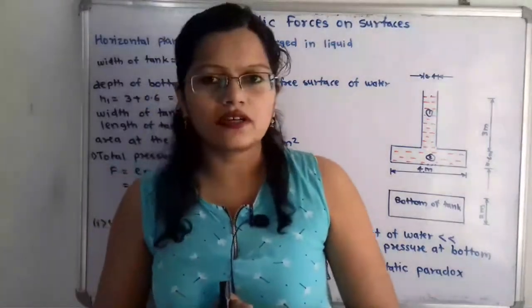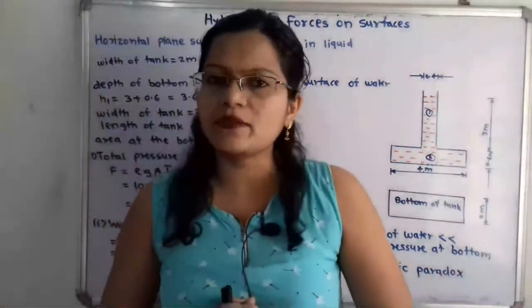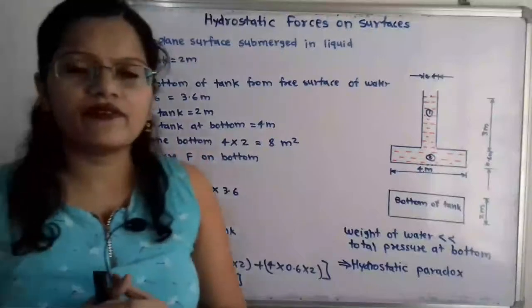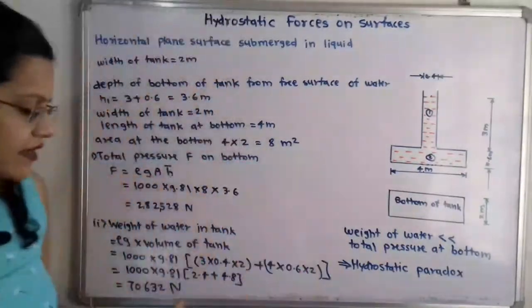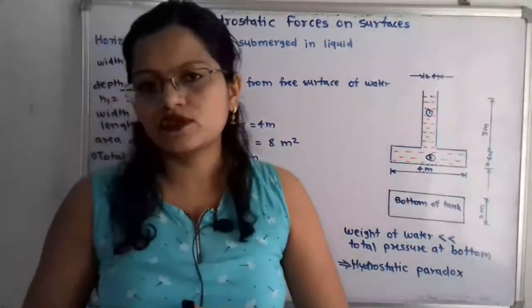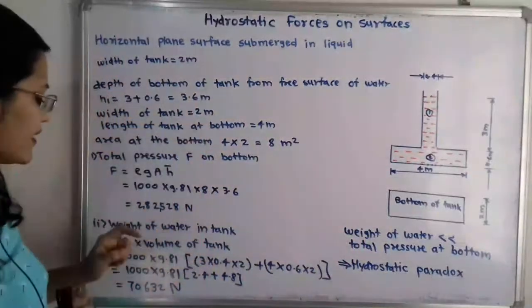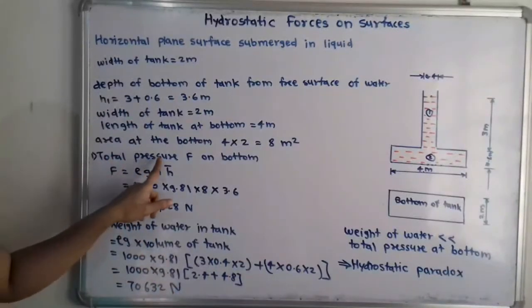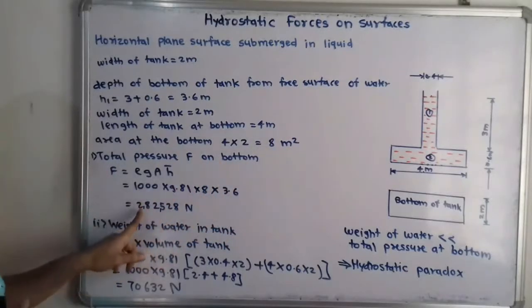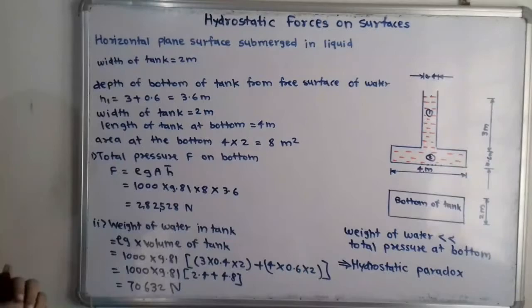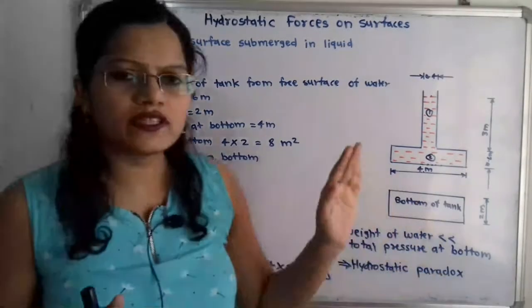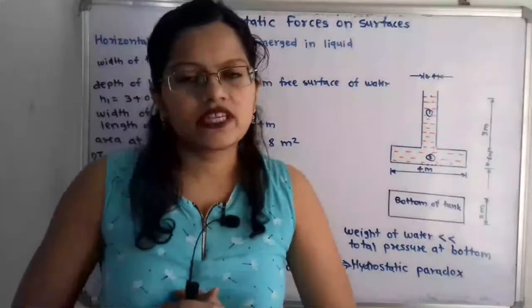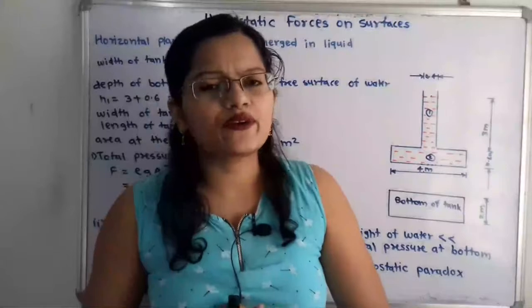For the third question, we compare the total pressure and the weight of water. The weight of water in the tank is 70,632 newtons, which is much less than the total pressure at the bottom, which is 282,528 newtons. When the weight of water in the tank is less than the total pressure at the bottom, this is the hydrostatic paradox.